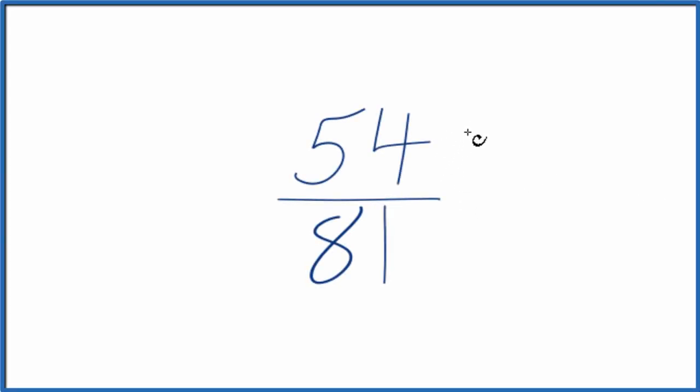Let's simplify the fraction 54 over 81. What we want to do is find an equivalent fraction to 54 over 81, one that has the same decimal value as 54 divided by 81, but a fraction that's been reduced or simplified to lowest terms.